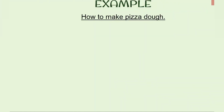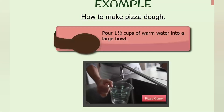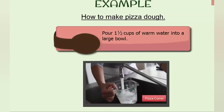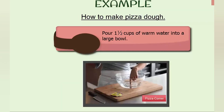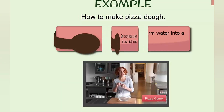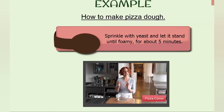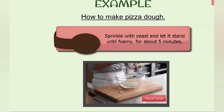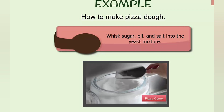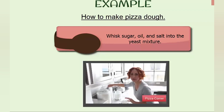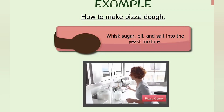Examples of process writing — how to make a pizza dough. Pour one and a half cups of warm water into a large bowl. Sprinkle with yeast and let it stand until foamy, for about five minutes. Whisk sugar, oil, and salt into the yeast mixture.